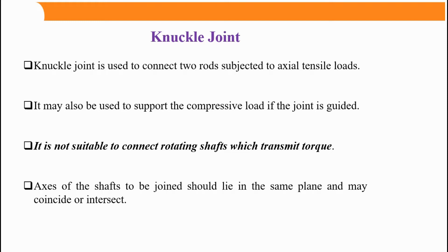To summarize, knuckle joint is used to connect two rods subjected to axial tensile load — this should be known by every student. The axis of these rods must lie in the same plane. It is not suitable to connect rotating shafts transmitting torque.